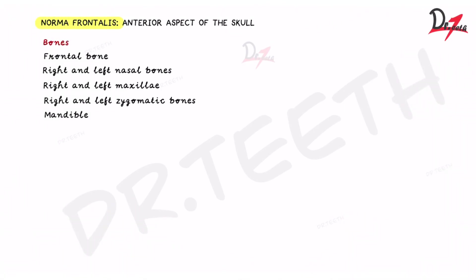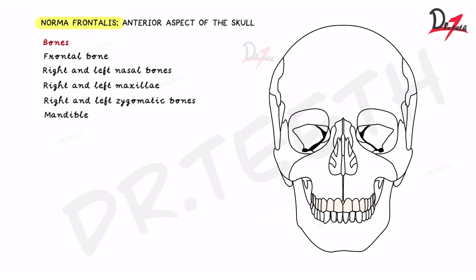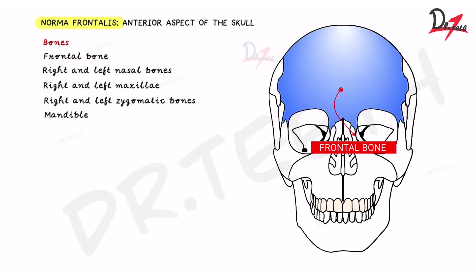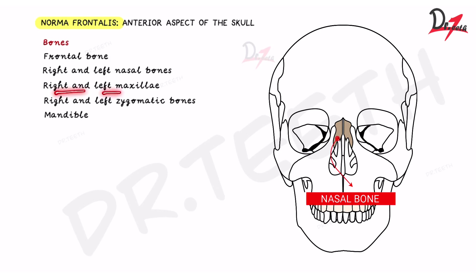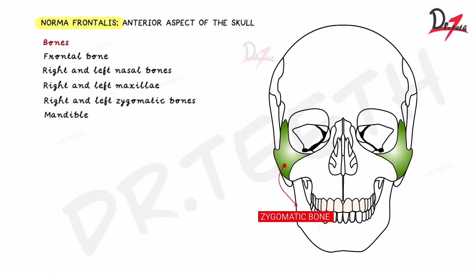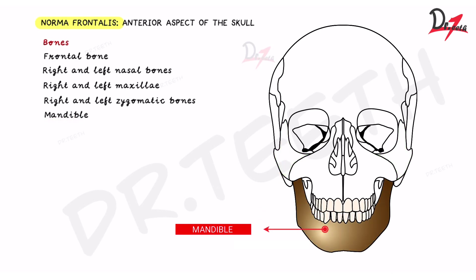Welcome back. In this video we are going to talk about the norma frontalis, which means the front of the skull — you are viewing the skull from the front, also called the anterior aspect of the skull. When you look at the skull from the front, the bones we find are: the frontal bone, the right and left nasal bones, the right and left maxilla, the right and left zygomatic bones which make up our cheekbones, and then one mandible.